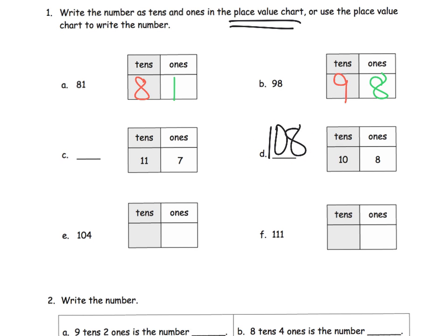Parents and teachers, remember we're going to try to say 108, not 'one hundred and 8.' Although that is perfectly fine — there is no rule. I know mathematicians will say the word 'and' means a decimal point, but that's not really true. We just prefer, by convention, to not say the word 'and.' We want to say 108, not 'one hundred and 8.'